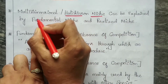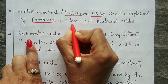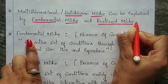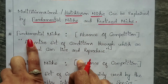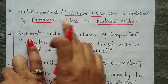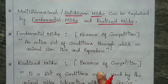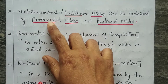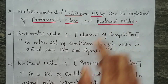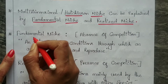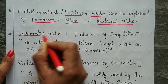The multi-dimensional or Hutchinson niche can be explained by fundamental niche and realized niche. So now we are going to learn about fundamental niche and realized niche, starting with their definitions.